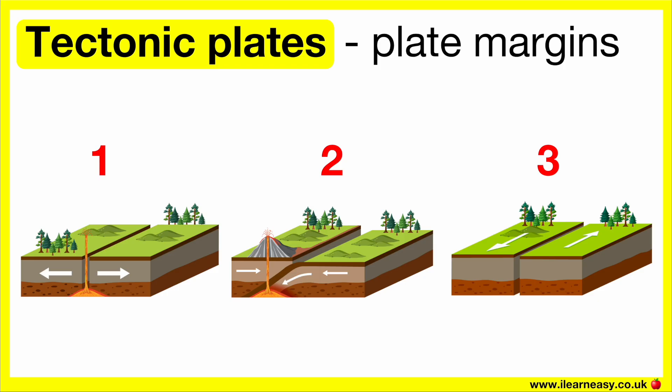Tectonic plates meet each other at their plate margins. There are three types of plate margins. The type of plate margin depends on the type of movement that occurs.